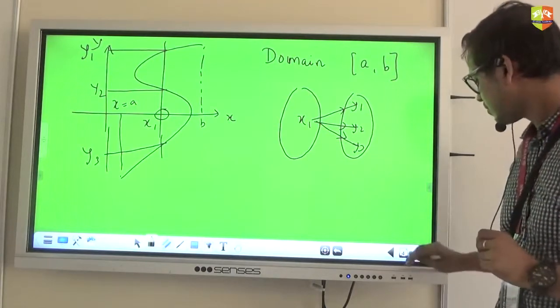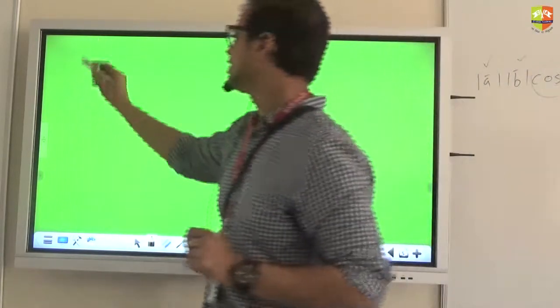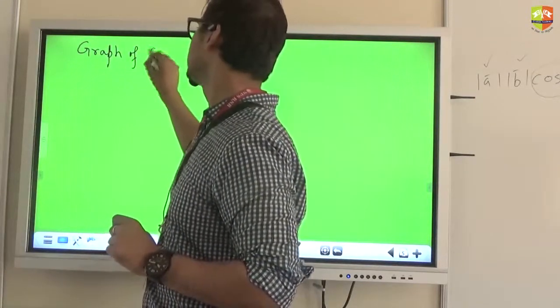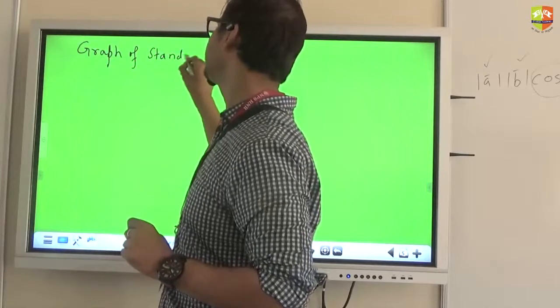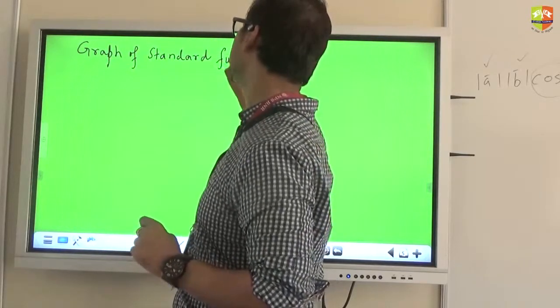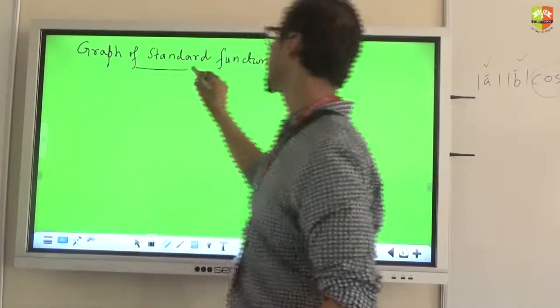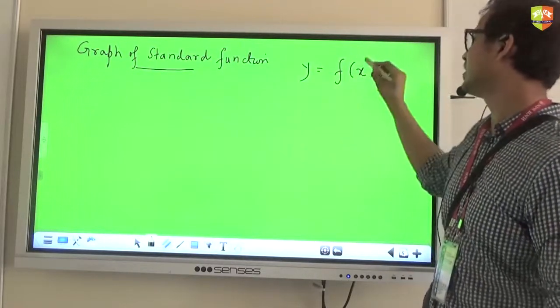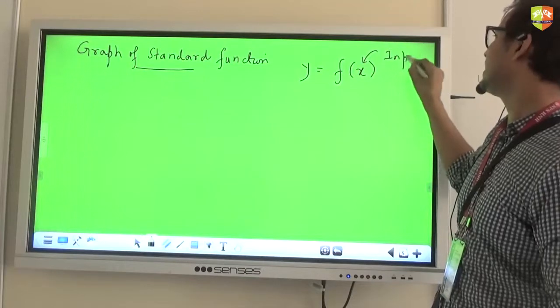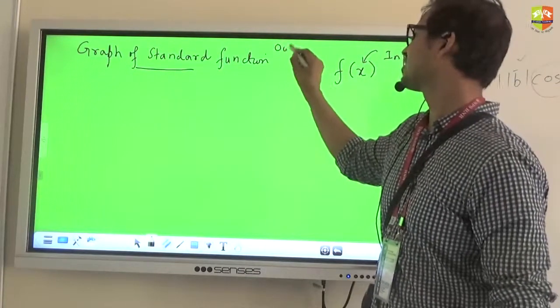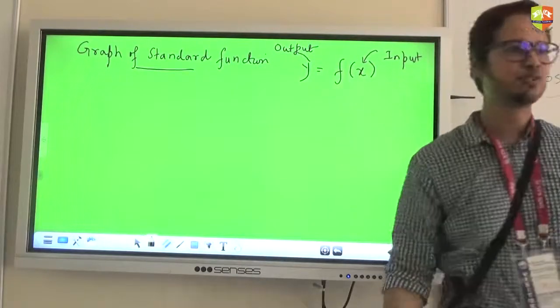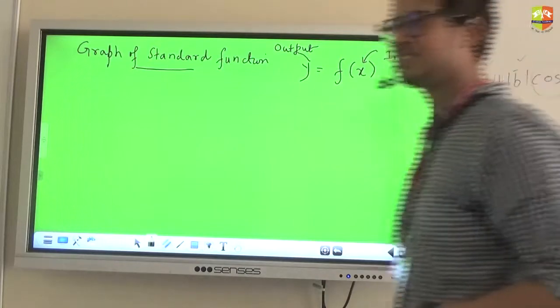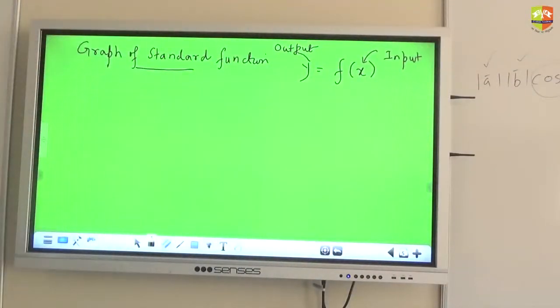Okay. So I will start with the graphs of standard functions. So function should be treated like a machine in your mind, where you put in some input and it gives you some output. So function is like a machine where you put in some input. You can call this as an input and you get an output for it. This is an output.